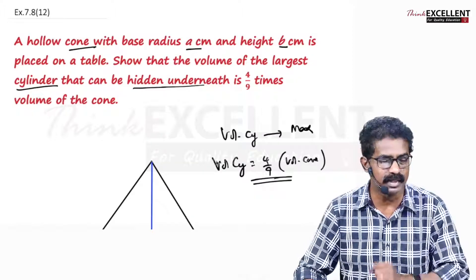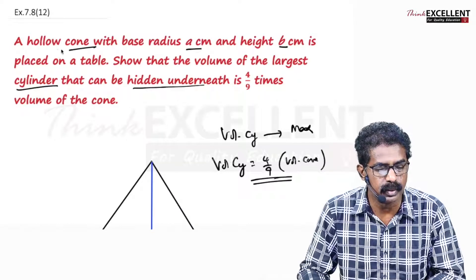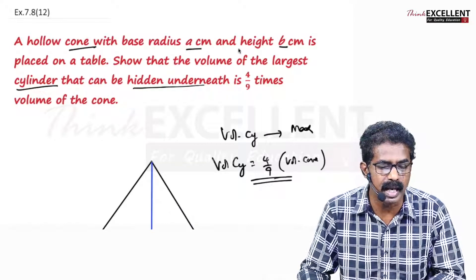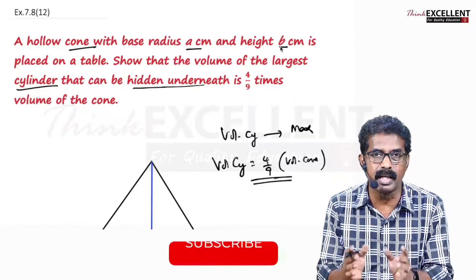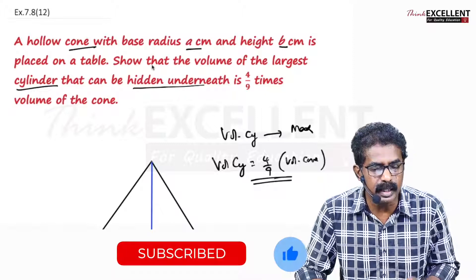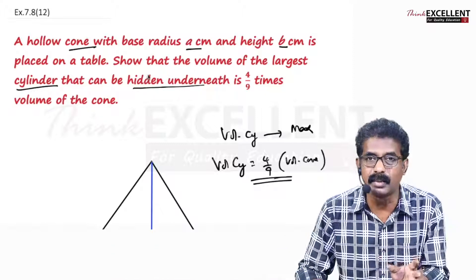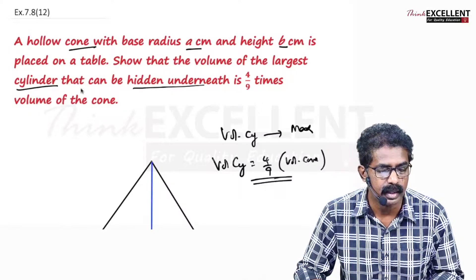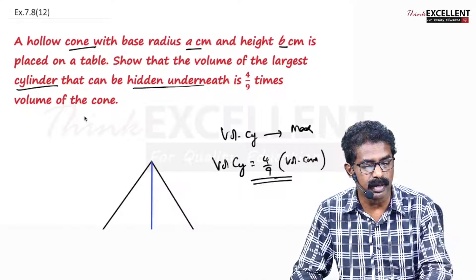Listen very carefully. For the cone, the base radius is A centimeter and height is B centimeter — both are given, so A and B are constants. The cone is placed on a table. For the cylinder we keep inside, we can change its dimensions.